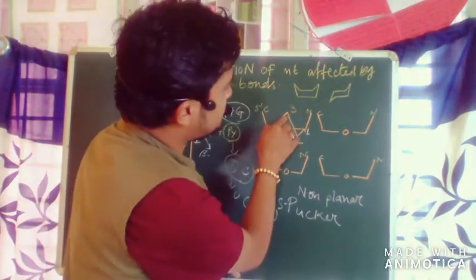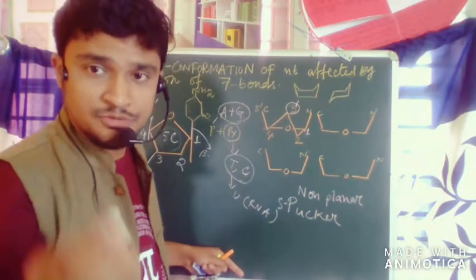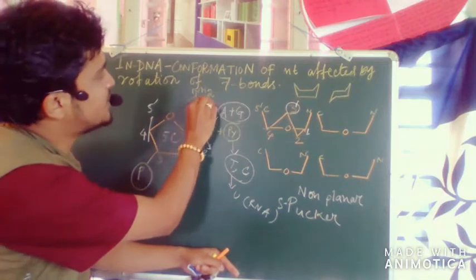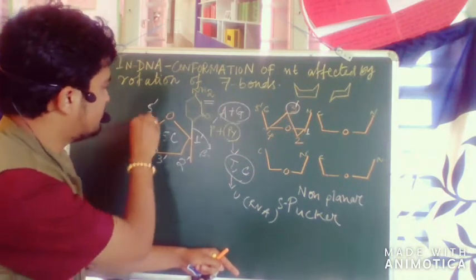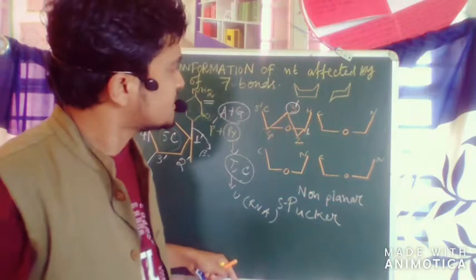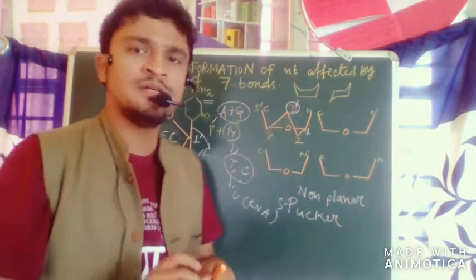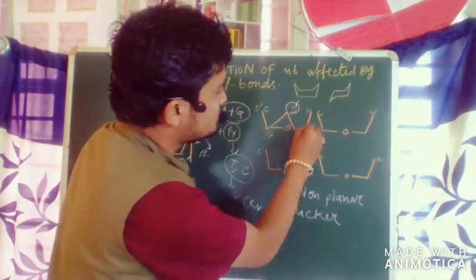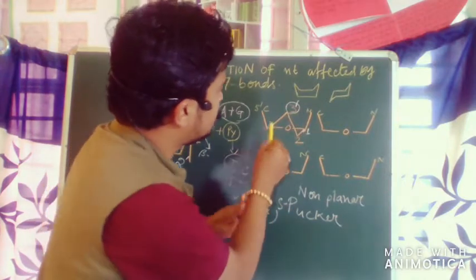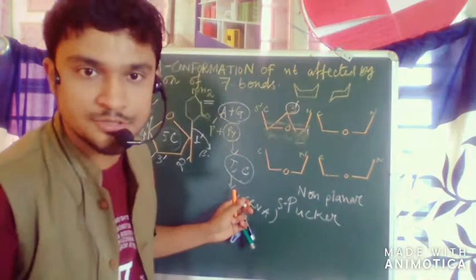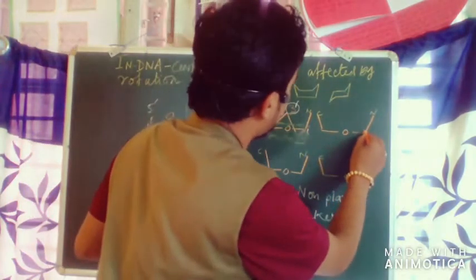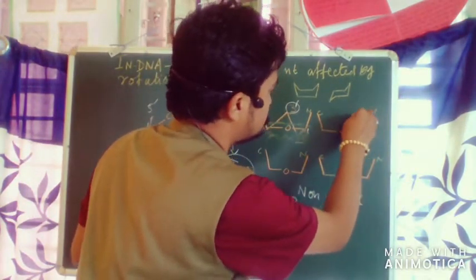We use the word 'prime' to distinguish carbons from the pentose sugar versus those in the nitrogen base. So 'prime' means it is in the pentose sugar; if no prime symbol is present, it is in the nitrogen base. For example, 3 prime puckering means the 3 prime carbon is going above the plane. Atoms 1, 2, and 4 remain in the same plane while 3 prime goes upward — this is called 3 prime endo puckering.